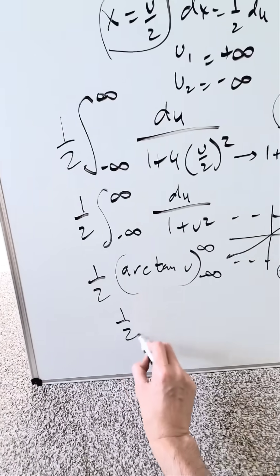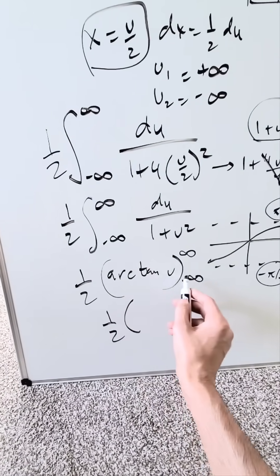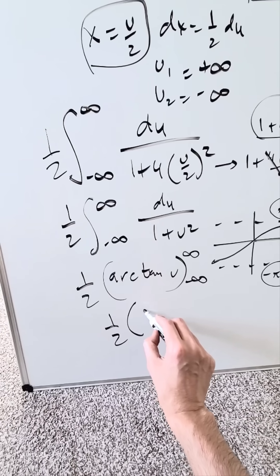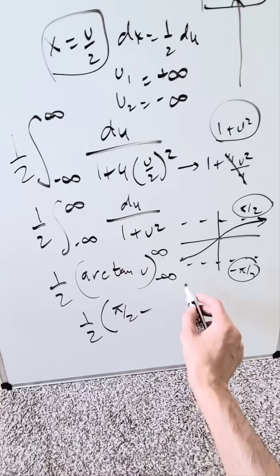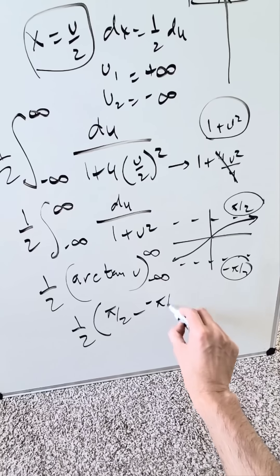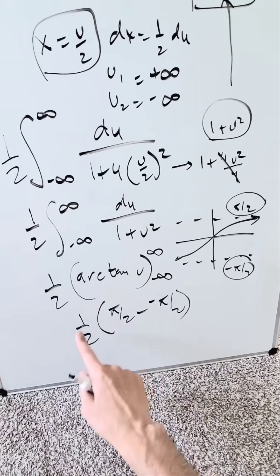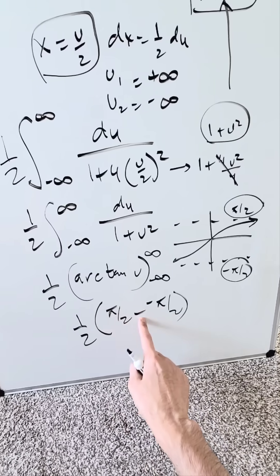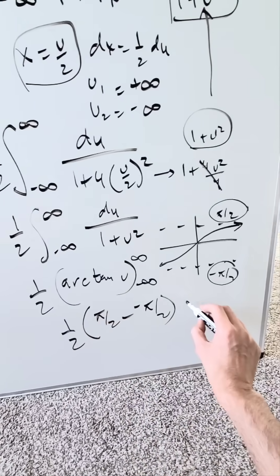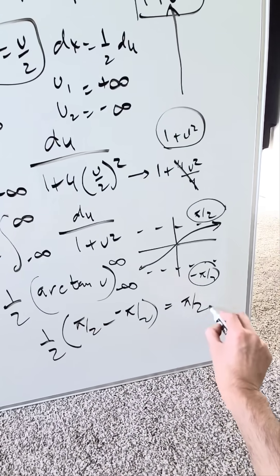Your end result here is 1 over 2 times arctan of positive infinity, which is pi over 2, minus arctan of minus infinity, which is minus pi over 2. You have 1 over 2 times pi over 2 minus minus pi over 2, which is pi. Pi times 1 over 2. Your end result here is pi over 2.